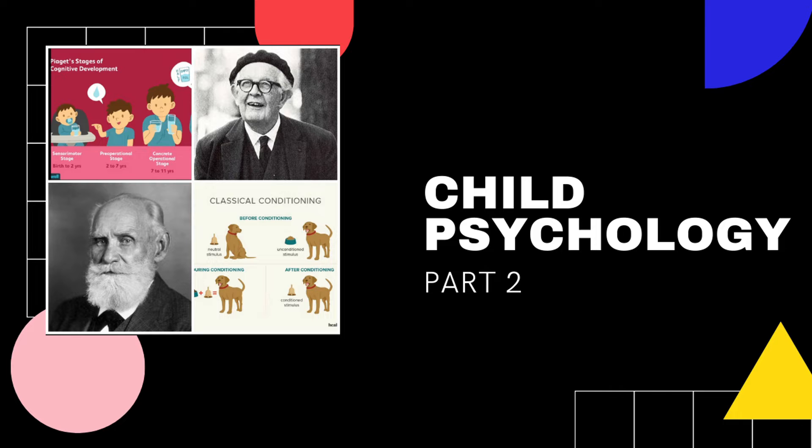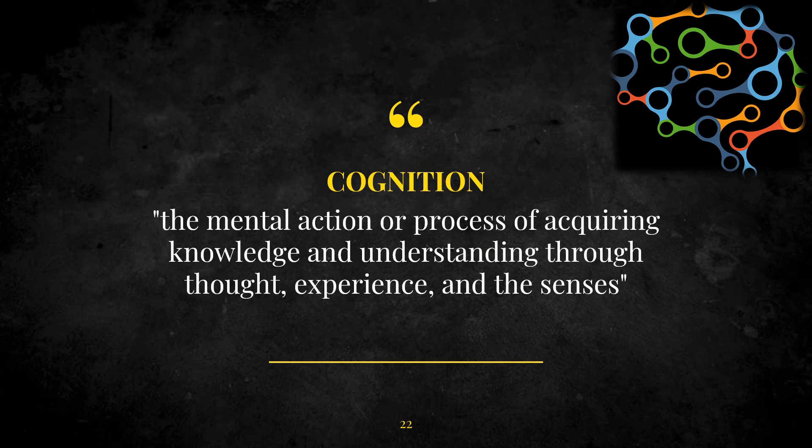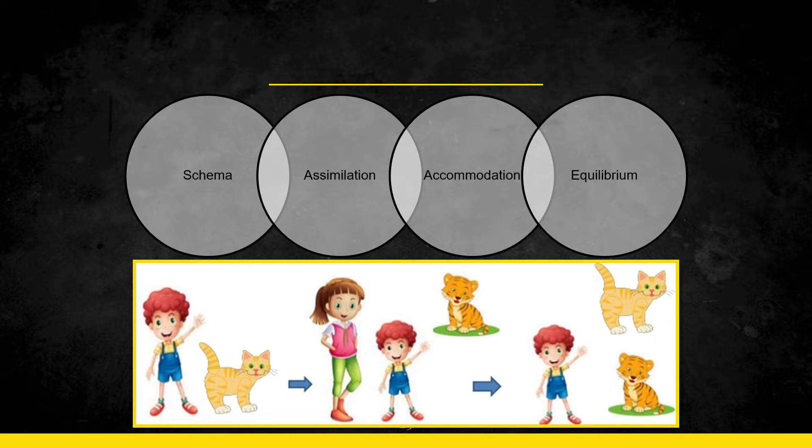Starting with the first theory of cognitive development given by Jean Piaget in 1952. Now before we start, what is cognition? So cognition is basically the mental action or the process of acquiring knowledge and understanding through thought, experience, and the senses.